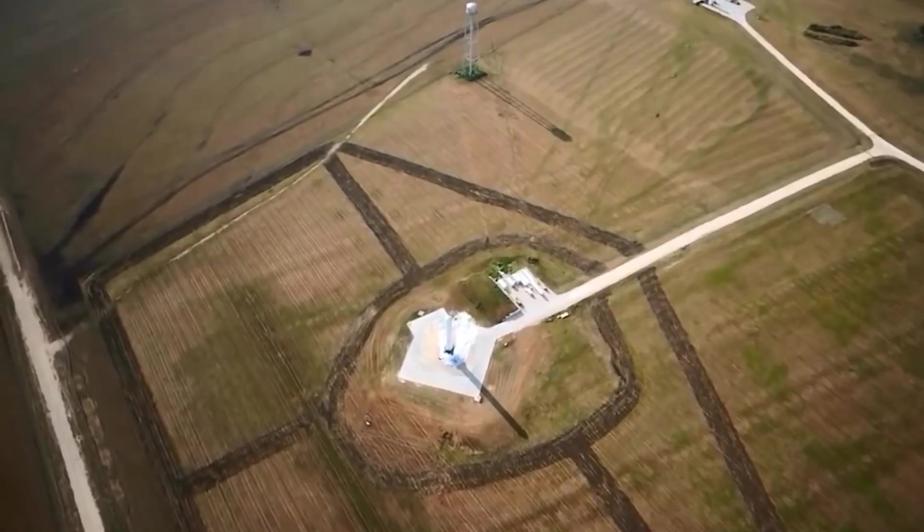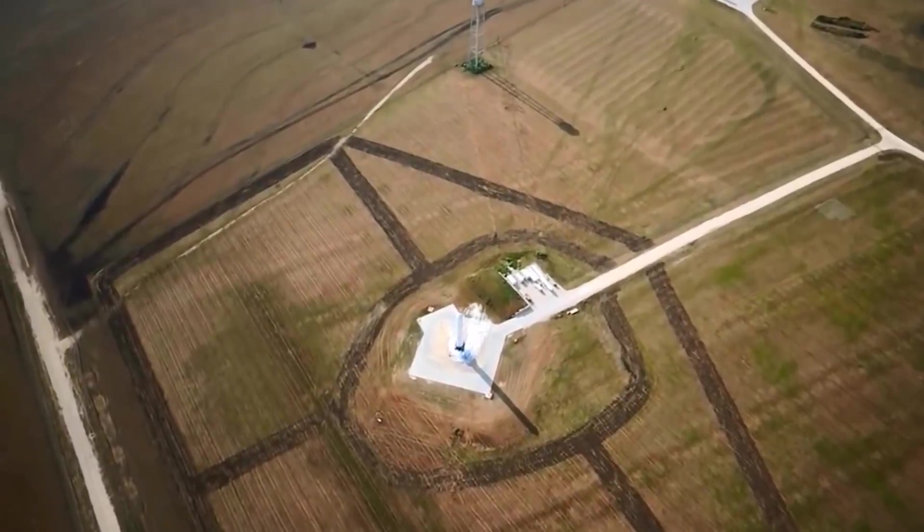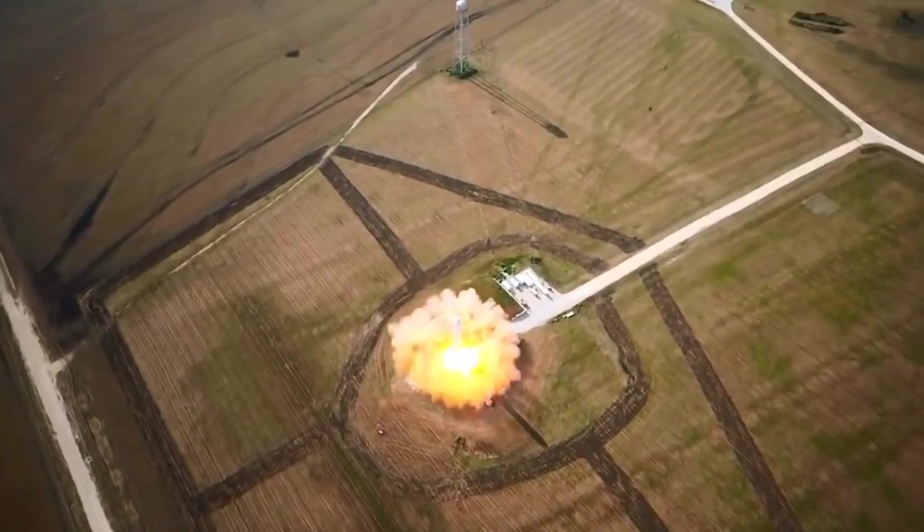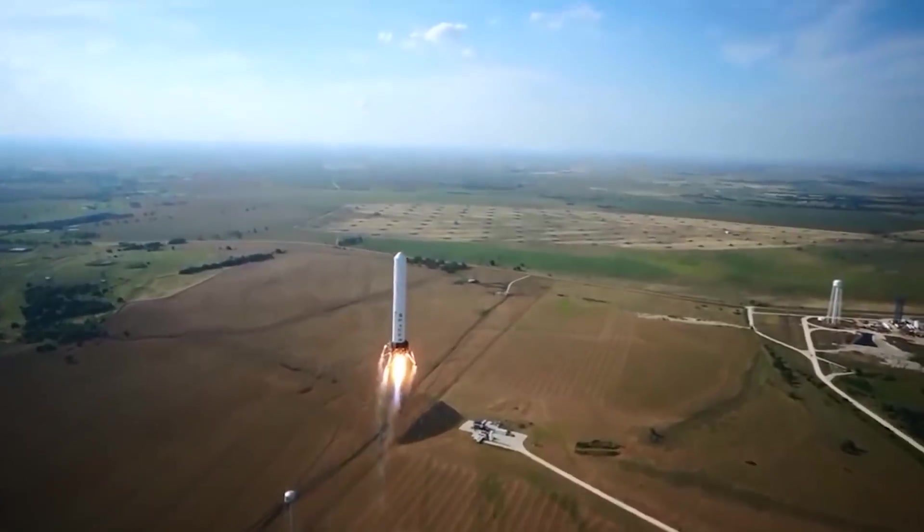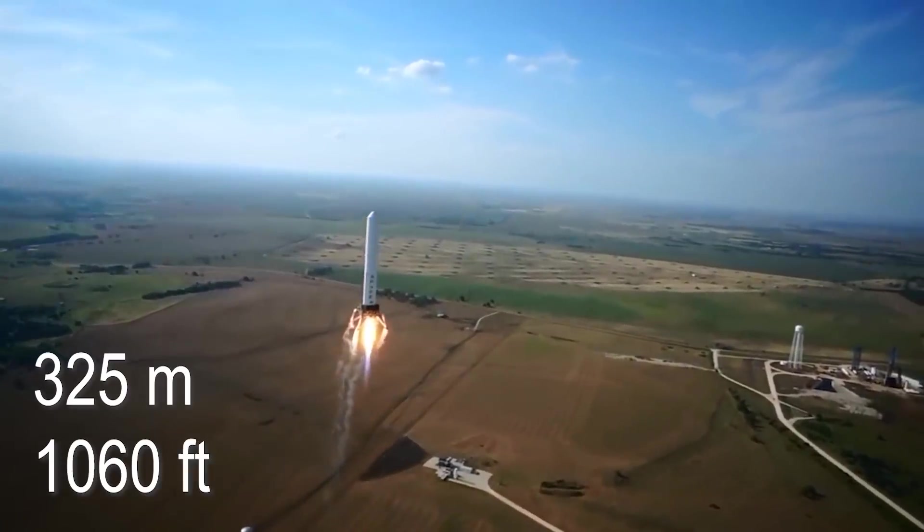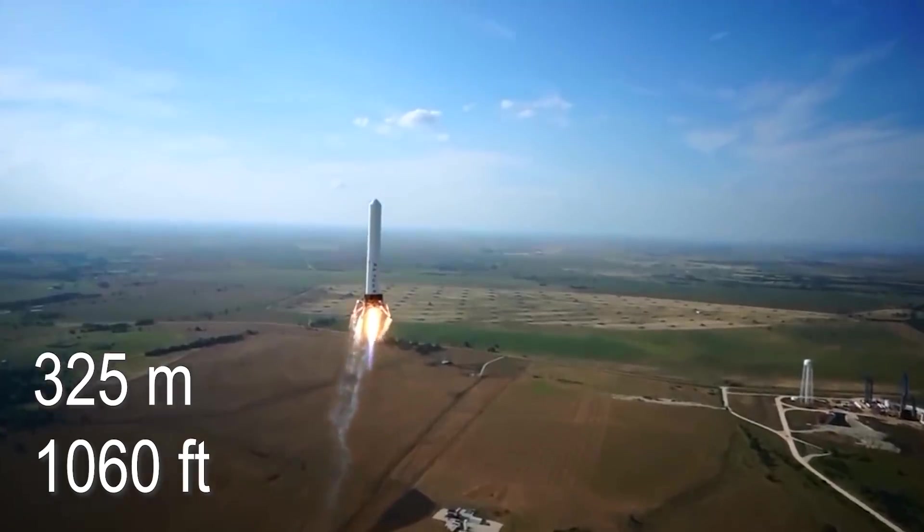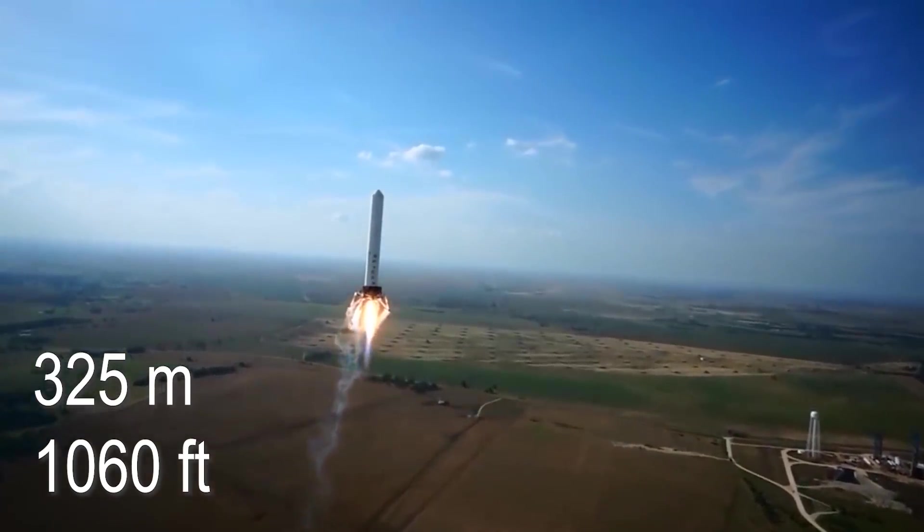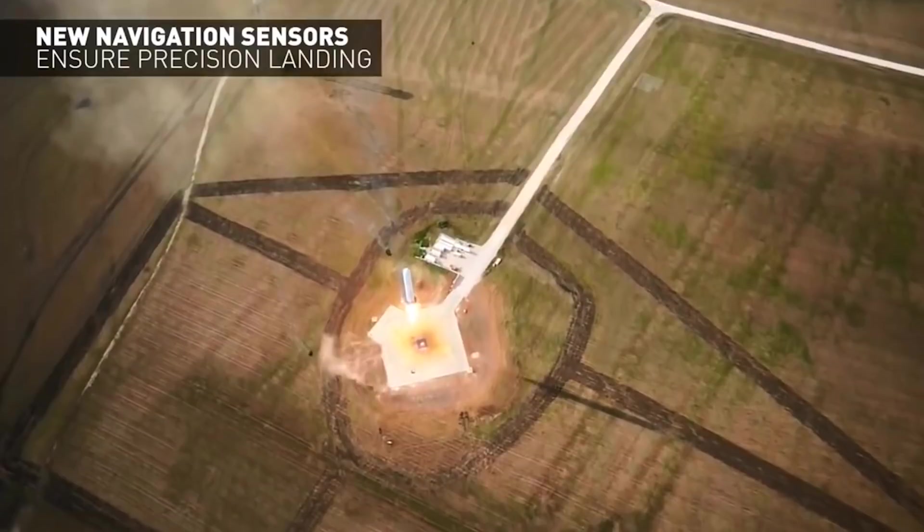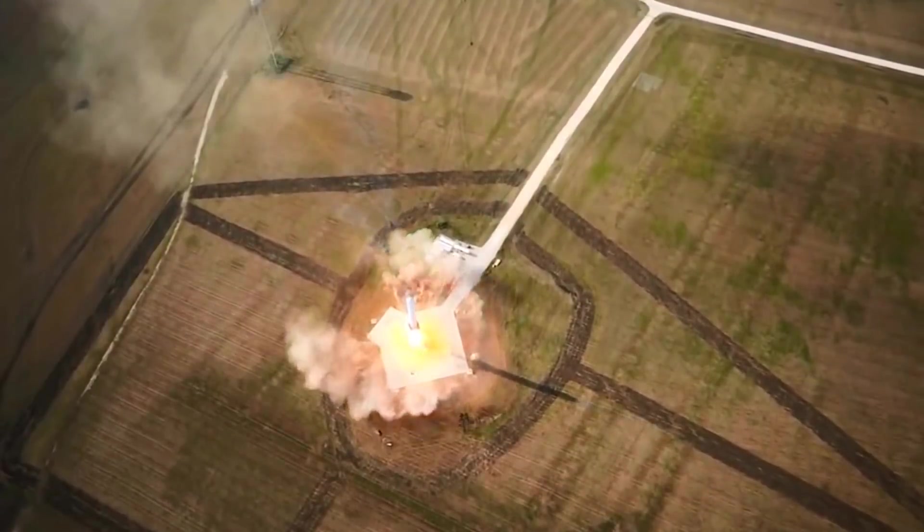Then, a couple months later, another flight of the Grasshopper rocket took place. This one flew for 68 seconds, reaching a maximum altitude of 325 meters. And this one tested certain navigation sensors that would be able to improve its ability to land on a specific location.